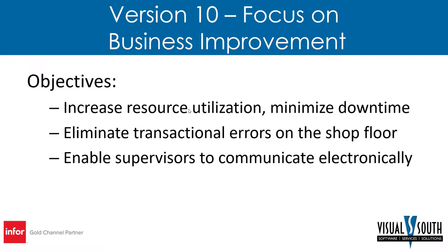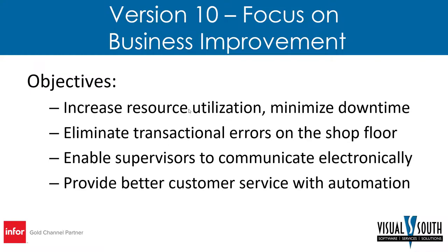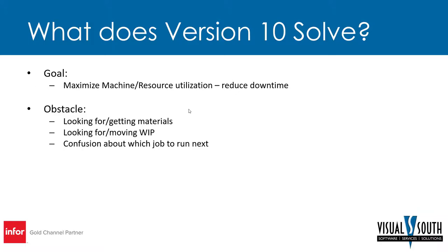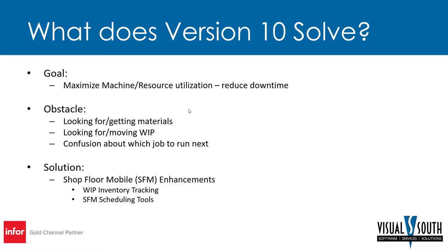The objectives of version 10 are to increase resource utilization, minimize downtime, and eliminate transactional errors on the shop floor — that's an ERP killer. We want to enable supervisors to communicate more electronically, keep them from roaming the shop floor, and improve customer service through automation. The obstacles are: folks looking for materials to start a job that hasn't been delivered yet, and when a job is in process, nobody knows where it is — whether it moved to the next resource, a holding area, or what job to run next. The solution is the shop floor mobile enhancements.